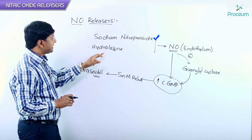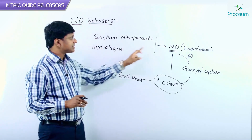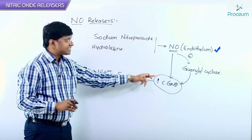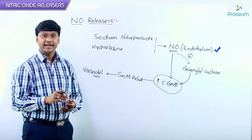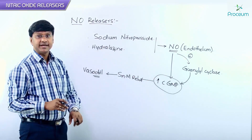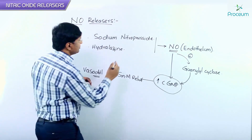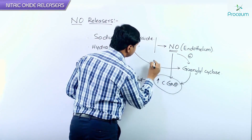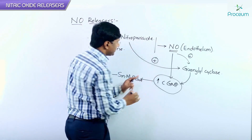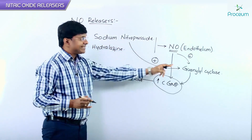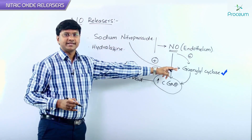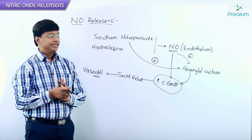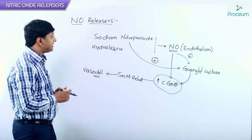Normally, sodium nitroprusside and hydralazine cause the release of nitric oxide for increasing the cyclic GMP levels. However, sodium nitroprusside can also directly stimulate the guanylyl cyclase to cause an increase in cyclic GMP.